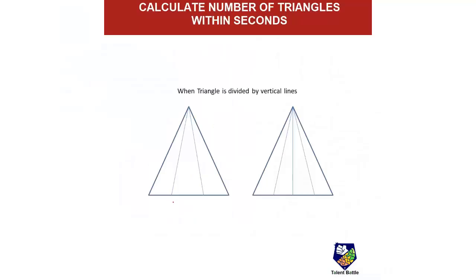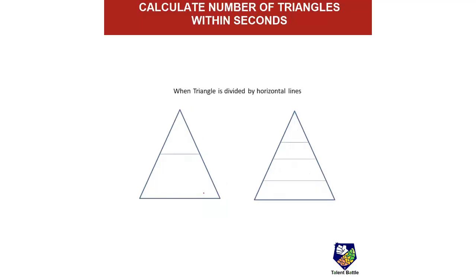How to calculate the number of triangles when a triangle is divided by vertical lines. Just number the smaller triangles and add them. For example, 1+2+3 = 6, so total triangles are 6. In another figure, 1+2+3+4 = 10, so total triangles are 10.